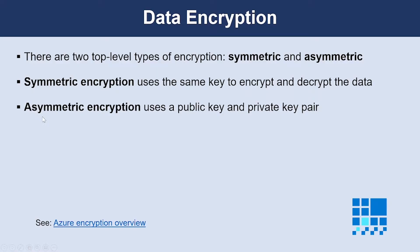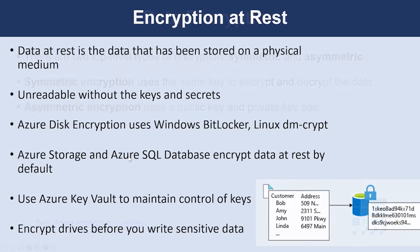The second option is asymmetric encryption. This uses a public key and a private key pair. Either key can encrypt but cannot decrypt its own encrypted data. To decrypt, you need the paired key. Asymmetric encryption is used for things like TLS and data signing.